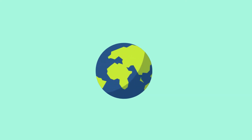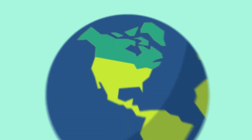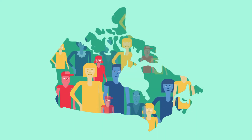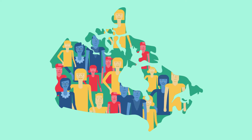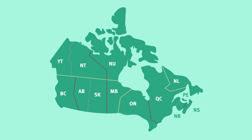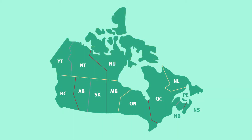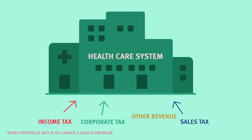Canada has been recognized worldwide for its publicly funded health care system, providing universal coverage for medically necessary health care services to all Canadians. Also known as Medicare, this national health insurance program is composed of an interlocking set of ten provincial and three territorial health insurance plans. The health care system is paid for by Canadians through federal, provincial and territorial taxation such as income taxes, corporate taxes, sales taxes and other revenue.